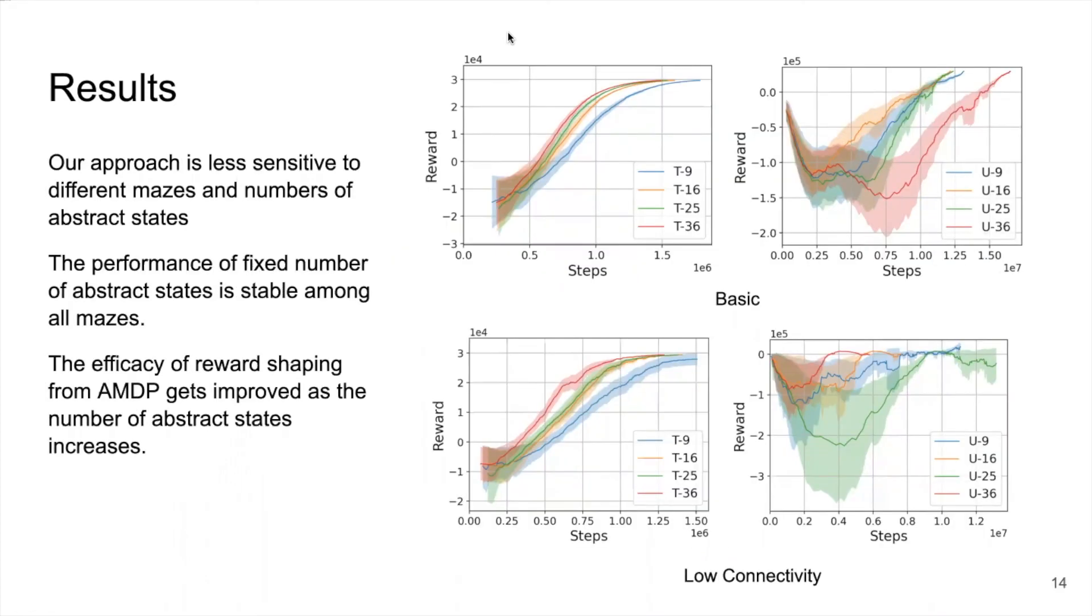We also evaluate both approaches under different numbers of abstract states. The left column is for our approach and the right column is for uniform approach. For example, T9 indicates the lowest number of abstract states and T36 indicates the highest. We showcase that our approach is less sensitive to different mazes and numbers of abstract states. The performance of a fixed number of abstract states is stable among all mazes and the efficacy of reward shaping from AMDP gets improved as the number of abstract states increases. In comparison, the performance of uniform approach is quite unstable and unpredictable. The better choice of number of abstract states in one maze is not necessarily better in another.